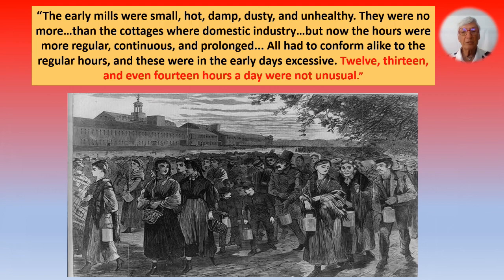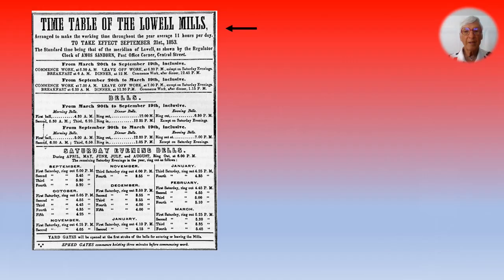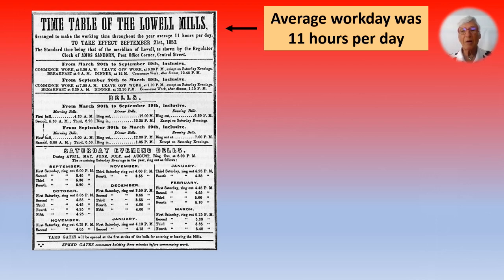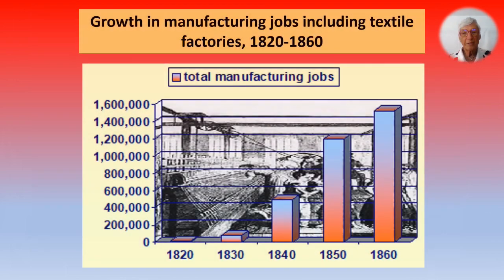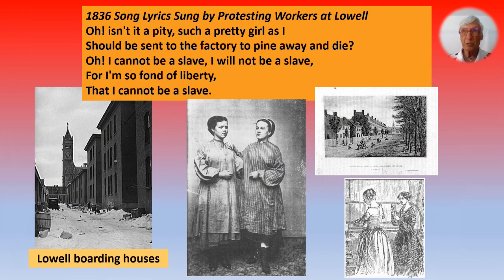The early mills were small, hot, damp, dusty, and unhealthy — miserable places. Twelve, 13, and even 14 hours a day were not unusual; the average workday was 11 hours. Thirteen hours per day of close attention and monotonous labor were extracted from many young women in these factories. They would be so fatigued that they would simply come home, eat quickly, and collapse into bed, then get up and renew the whole thing the next day. Growth in manufacturing and jobs, including textile industries, went from virtually none in 1820 to almost a million and a half by 1860.